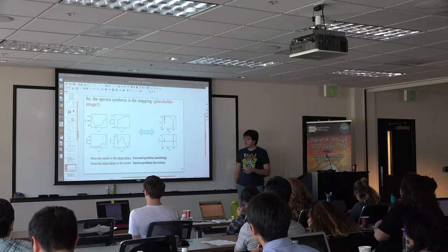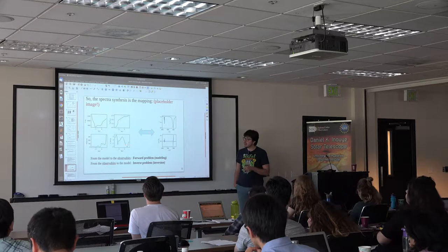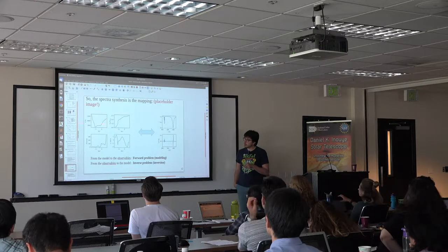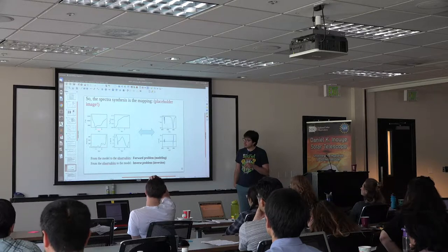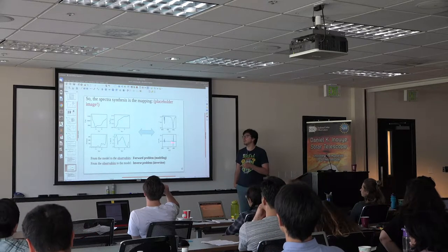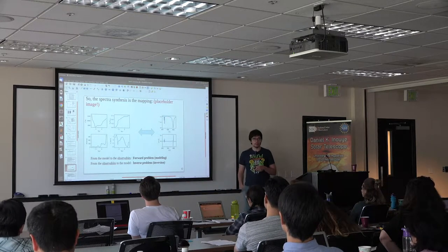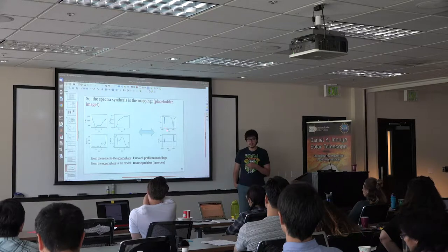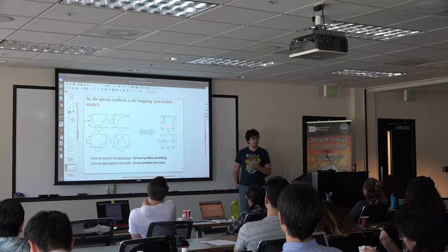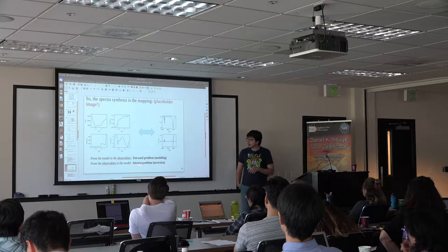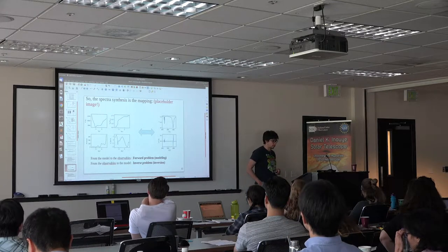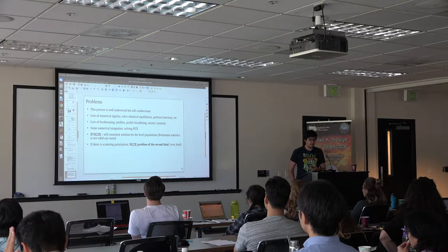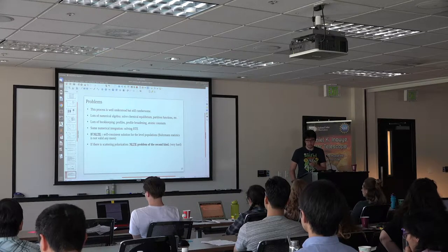Here on the left hand side is one model atmosphere extracted from a Bifrost simulation: temperature vs. optical depth, total particle density, magnetic field, and line-of-sight velocity. On the right are the shapes of spectral lines — intensity and circular polarization. Tomorrow we'll talk about the inverse problem, which means how to deduce these physical quantities from the observed spectra. Short answer: it's impossible, but we keep trying because we can sort of do it. To solve the inverse problem you always need to solve the forward problem first.